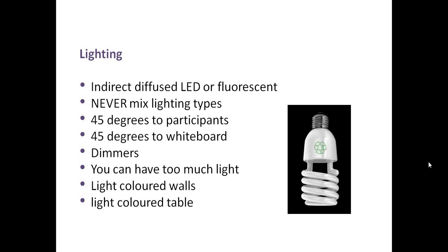Lighting is one of the areas that is easiest to break and has some of the simplest rules to get right, so we can get a lot of bang for buck from having a look at the lighting and the environment we're going into. Direct lighting is bad — very harsh casts, big dark shadows, particularly on faces from eyebrows and nose. Indirect or diffused LED or fluorescent lights are very effective. Indirect can mean bouncing them off the roof.